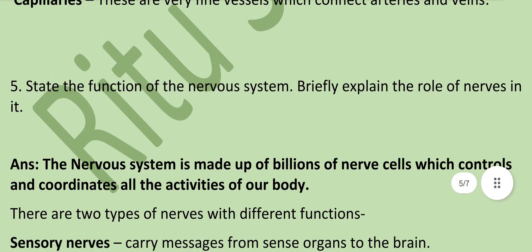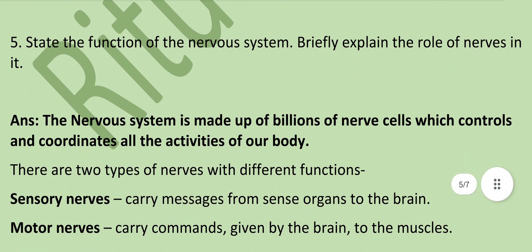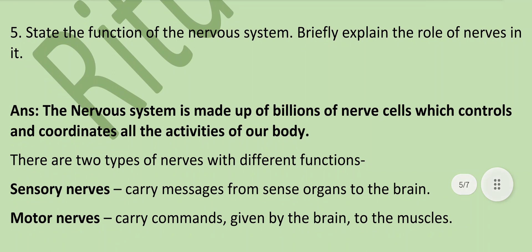State the function of the nervous system and briefly explain the role of nerves in it. The nervous system is made up of billions of nerve cells which control and coordinate all the activities of our body. There are two types of nerves: sensory nerves carry messages from sense organs to the brain, and motor nerves carry commands given by the brain to the muscles.